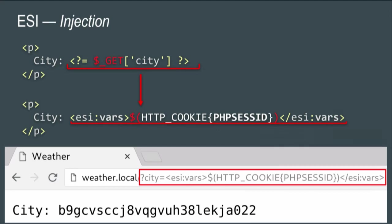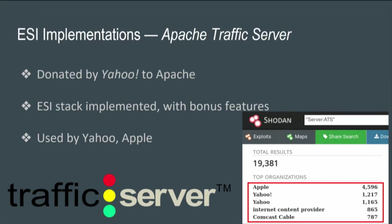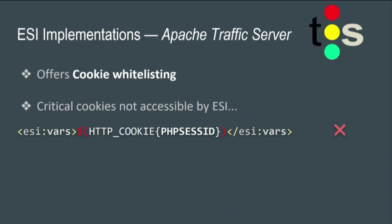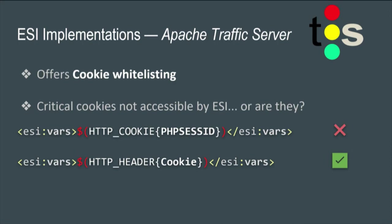Let's look at two ESI engine implementations. First, Apache Traffic Server — used by high-profile organizations. Shodan tells us it's used by Apple, Yahoo, and Comcast. They have the initial ESI spec implemented but also added bonus features, some of which are security features. The first security feature is cookie whitelisting: even if you inject ESI tags, you sometimes can't access cookies unless they're whitelisted. But reading the documentation reveals another ESI variable called HTTP header, which allows you to refer to any header — meaning you can access cookies anyway. So the whitelisting is easily bypassed. That was fixed when I reported it two months ago.